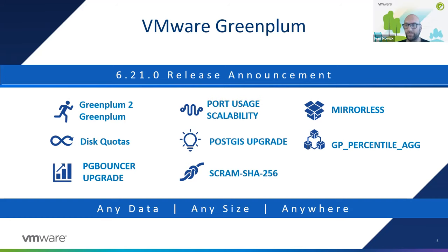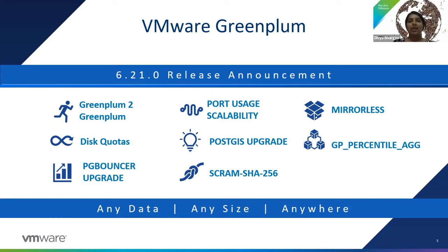We also introduced a new module called GP Percentile AG. When you add this extension, it provides improved query optimizer performance for ordered set aggregate functions — things like percentile_cont, percentile_disc, and median. These are particularly useful for MADlib functions which use them extensively.